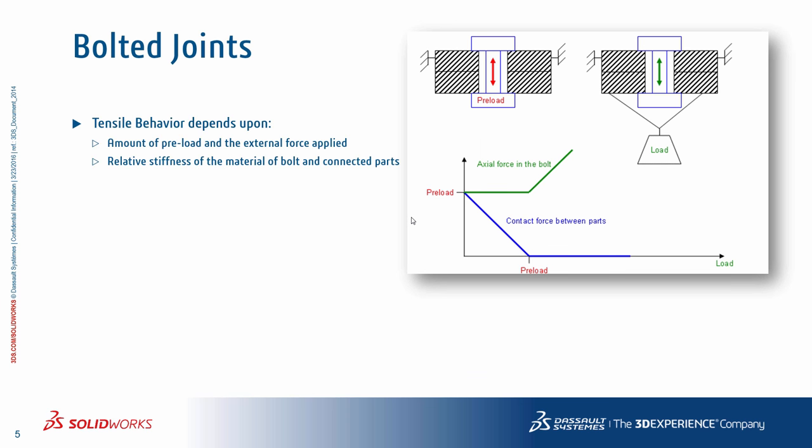Tensile behavior in a bolted joint depends on the amount of preload and the external force applied. The relative stiffness of the material of the bolt and the connected parts are also crucial in determining what load the bolt will eventually carry compared to the connecting parts. For example, consider perfectly rigid parts tightened together by a bolt. If the bolt has been given a preload, then applying an external tensile force will have actually no effect on the axial force in the bolt, unless the external force becomes greater than the bolt preload force. The contact force starts to reduce, and once the external load exceeds the bolt preload, the bolt starts to take on some of the external load.